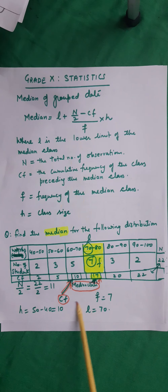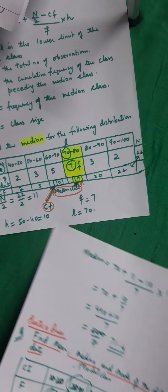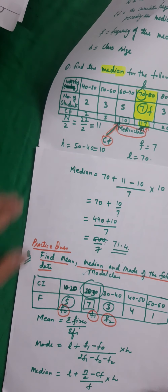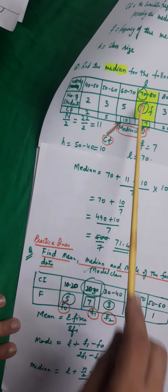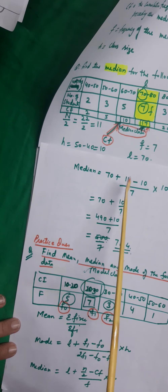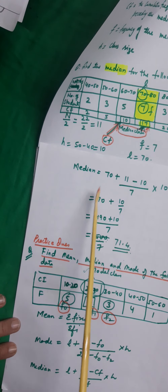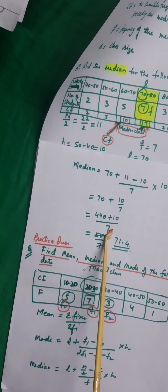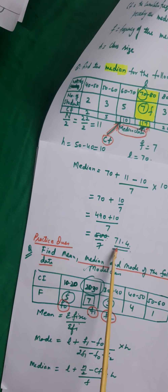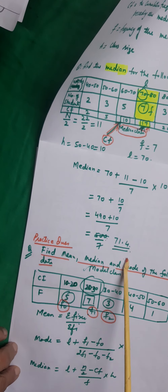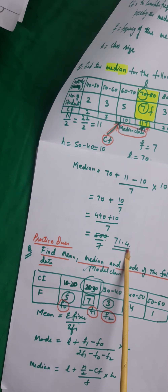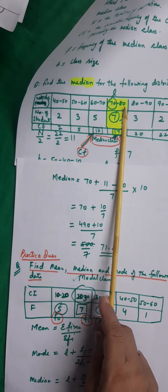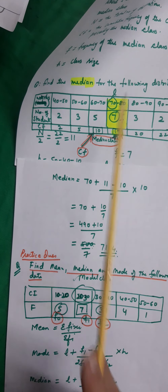Substituting all values: median equals 70 plus (11 minus 10) upon 7 into 10, which equals 70 plus 10/7, giving 490 plus 10 upon 7, which is 500/7, equal to 71.4. We verify: 71.4 lies between 70 and 80, which is our median class, confirming the answer is correct.